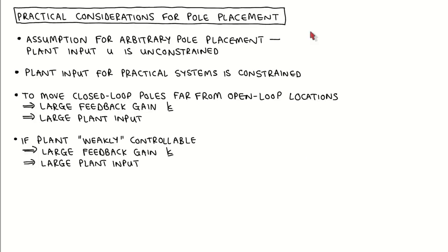Although it is theoretically possible to place the closed loop poles in arbitrary locations for a controllable plant, it is not entirely possible for practical systems. An important thing to realize is that we implicitly made the assumption that the plant input u is unconstrained when we looked at the conditions for arbitrary pole placement. The plant input for practical systems is always constrained, and if the calculated plant input exceeds the constraints, the model will not behave as we expect anymore. We can therefore practically only place the closed loop poles in locations for which the plant input would not saturate.